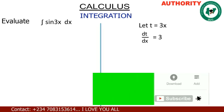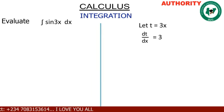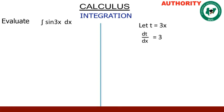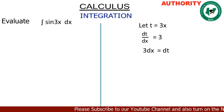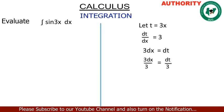From here I want you to make dx the subject. We are going to cross multiply, so we are going to have 3 dx is equal to dt. Because we want to make dx the subject, we are going to divide both sides by 3: 3 dx divided by 3 is equal to dt divided by 3.